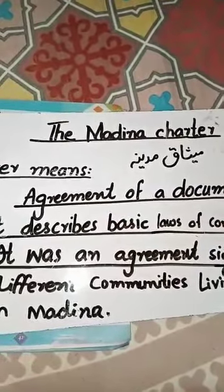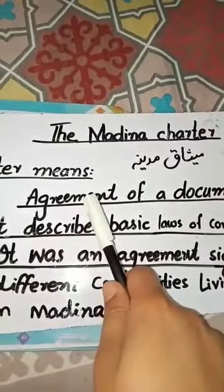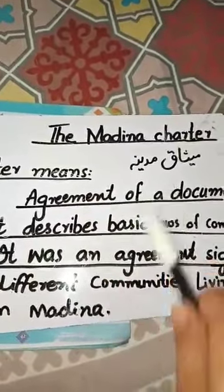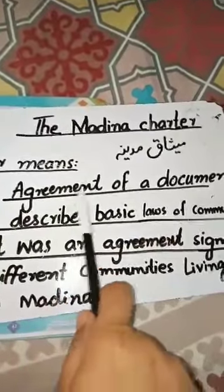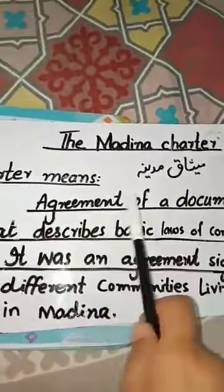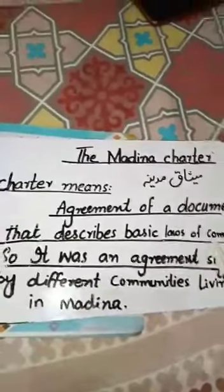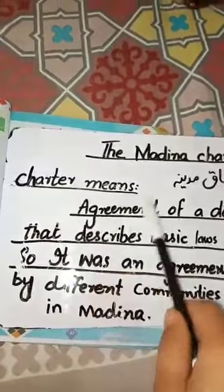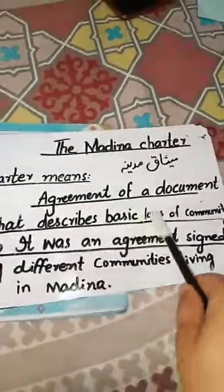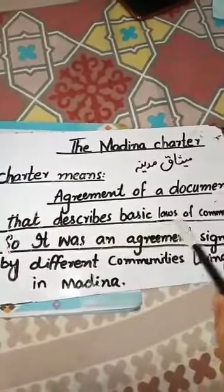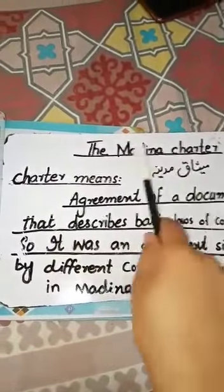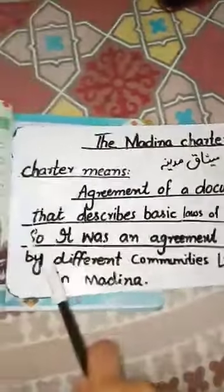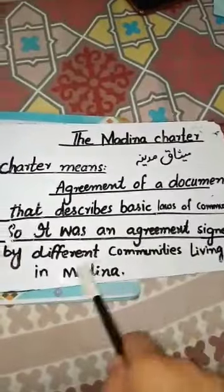It is a very important chapter. First of all, let's understand the name of the topic. Charter means an agreement or a document that describes the basic laws of a community. So it was an agreement — Medina Charter was an agreement signed by different communities living in Medina.